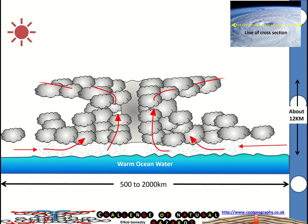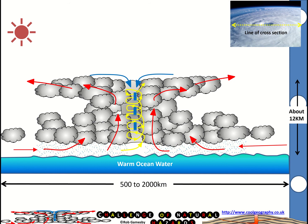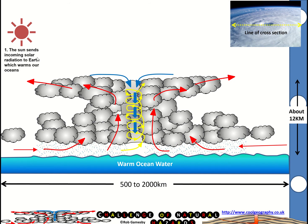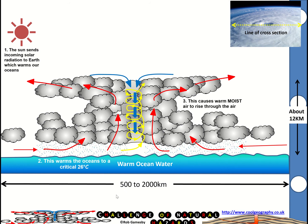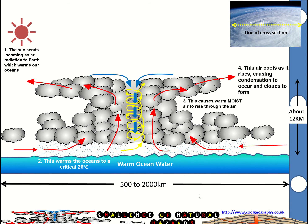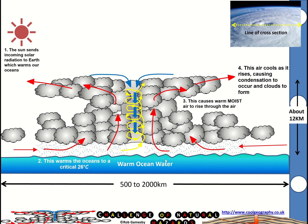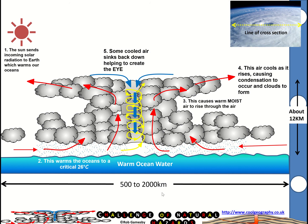In terms of how they're created, the sun sends incoming radiation that warms our oceans to at least 26–27 degrees Celsius. That causes warm, moist air to rise, which cools as it rises, causing condensation to occur and clouds to form. Some cooled air sinks back down, helping to create the eye.